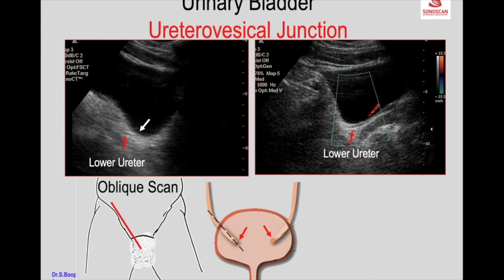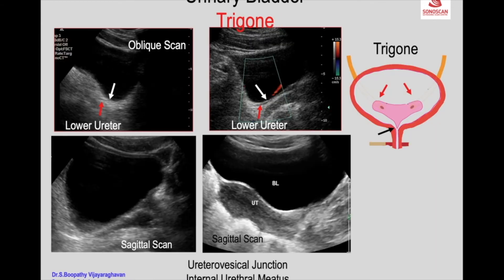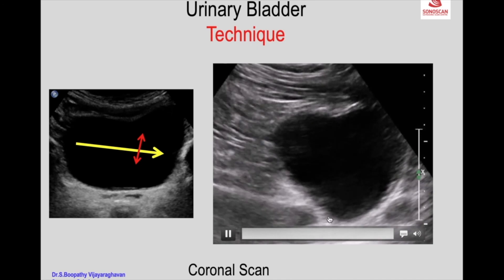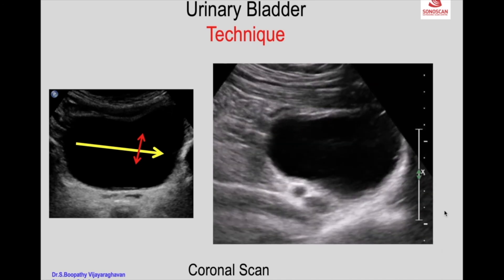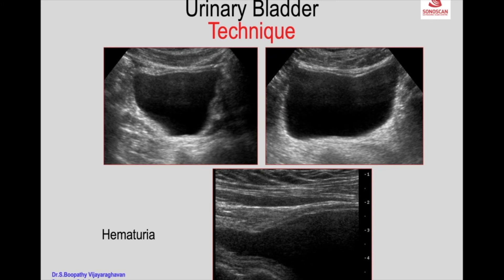Similarly, when you apply color Doppler you can see the distal most ureter with the jet — that is the trigone. To identify the trigone, you identify the internal urethral meatus in the male and in the female, and then the uretero-vesical junction. This will be the left lateral wall of the urinary bladder, which is useful in certain situations, as the following illustration will show.